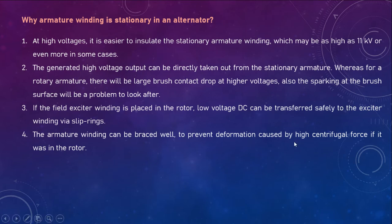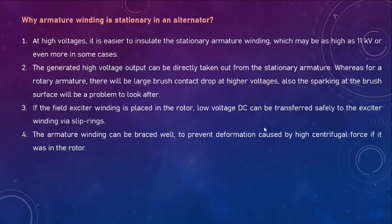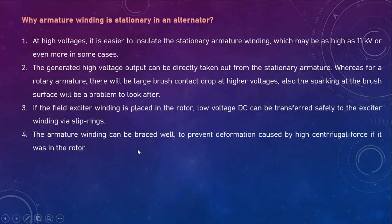The armature winding can be braced well to prevent deformation caused by high centrifugal force. If the armature winding were in the rotor, continuously rotating at very high speed to generate very high voltage, deformation caused by centrifugal force could occur. It would have to be braced very tightly in the rotor. This problem can be avoided if it is placed in the stator side. These are the main advantages of stationary armature winding in the stator.